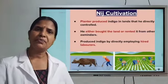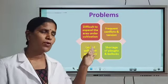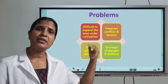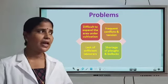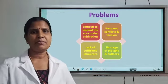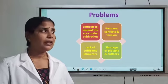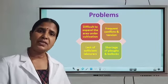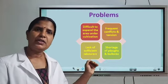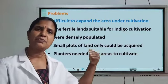But nij cultivation faced certain problems — mainly four problems. The first problem: it was very difficult for the planters to expand their cultivation under nij cultivation. The second problem: this led to frequent clashes and tension between peasants and the planters. The third problem: they faced a shortage of laborers. The fourth problem: not getting sufficient bullocks and plows to prepare the soil.